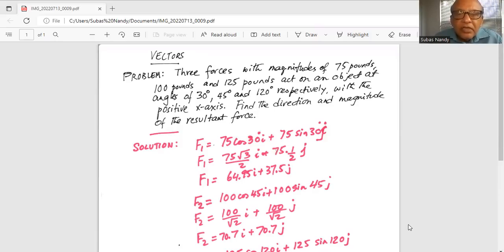So the first one, magnitude is 75. So it is 75 cosine 30 degree i plus 75 sine 30 degree j, because 30 degrees is the angle it makes with the positive x-axis.